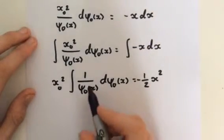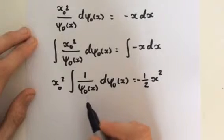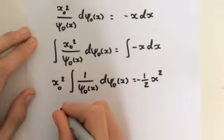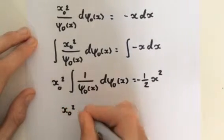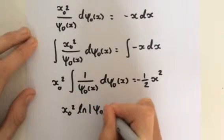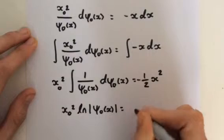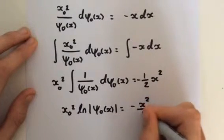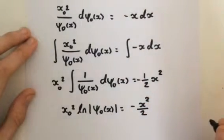And the integral of one over psi_0(x) is simply the natural log. So therefore we get x_0 squared multiplied by the natural log of psi_0(x) is equal to negative x squared over 2 x_0 squared.